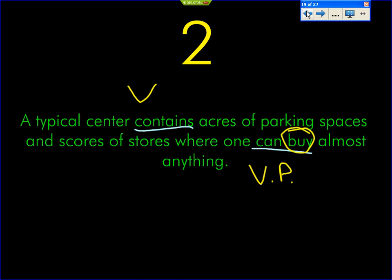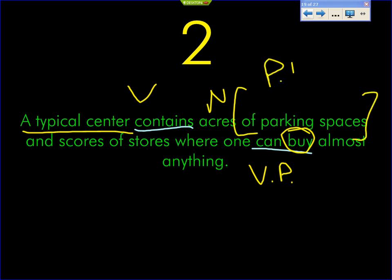Nicole: a typical center — very good. Sydney — careful, you've got 'of' in there. Just 'parking spaces' — very good. So what do we have? We have a noun, and then this overall is a prepositional phrase with a noun phrase inside it. Last one. Gretchen: scores — no, 'scores' is one word, therefore it can't qualify as a phrase. Almost anything — very good.